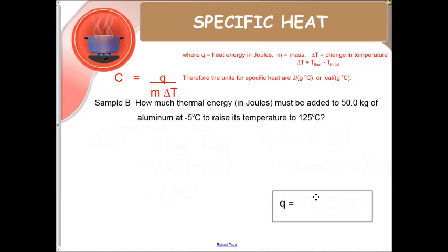Now let's try sample B. How much thermal energy in joules must be added to 50 kilograms of aluminum at minus 5 degrees Celsius to raise its temperature to 125 degrees Celsius?